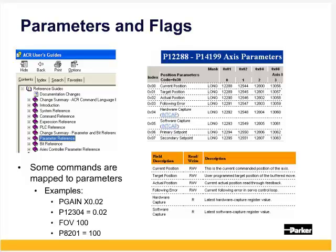Note that some commands are mapped to parameters, as we saw with the pause and resume. Examples include PGain, which is the proportional gain in P123044AX0. You could set PGainX0.02 or use the parameter P12304 equals .02. The feed rate overwrite, FOV100, could also be set with P8201 equals 100.